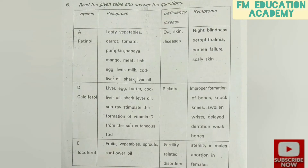Question 6: read the given table and answer the questions. Vitamins A, D, and E are given — retinol, calciferol, and tocopherol. Resources for vitamin A are leafy vegetables, carrot, tomato, pumpkin, papaya, mango, meat, fish, etc. Resources for calciferol include liver, egg, butter, cod liver oil, etc. Resources for vitamin E are fruits, vegetables, sprouts, and sunflower oil. Deficiency diseases and symptoms are also given in the table.